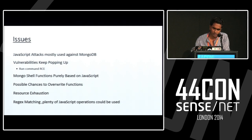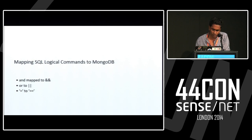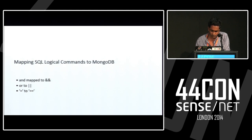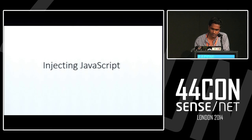Since the power of JavaScript can be used within the Mongo shell, there's a huge possibility for attack vectors. This is a key point: mapping SQL commands to MongoDB. The AND is mapped to OR, and equals maps to double-equals in JavaScript or in Mongo. The reason I'm showing this is that as soon as I display the demo, you could see that I'll be using some of these rather than the AND.